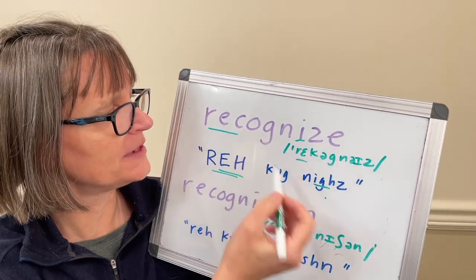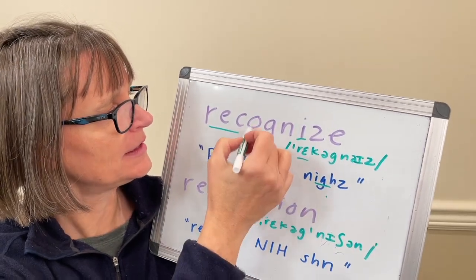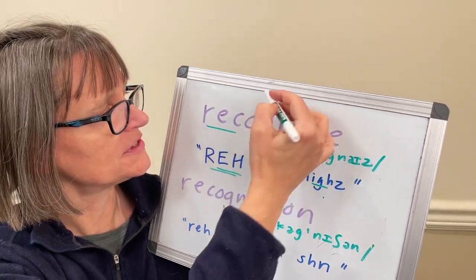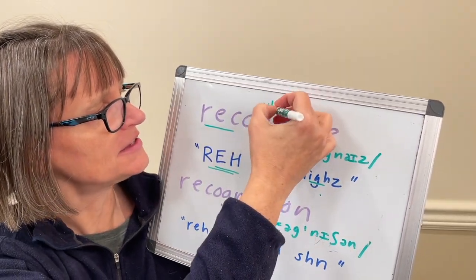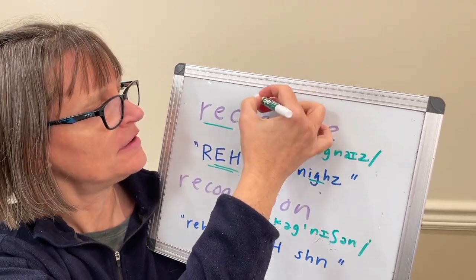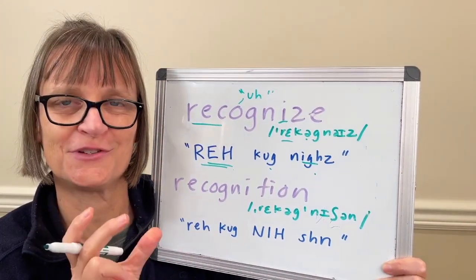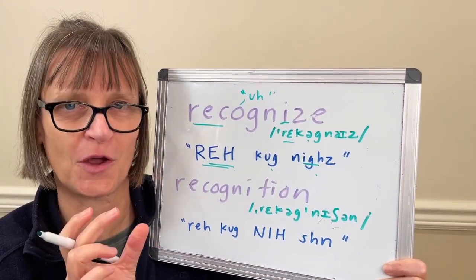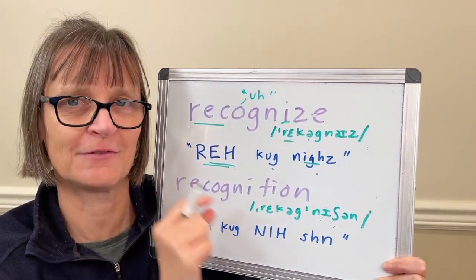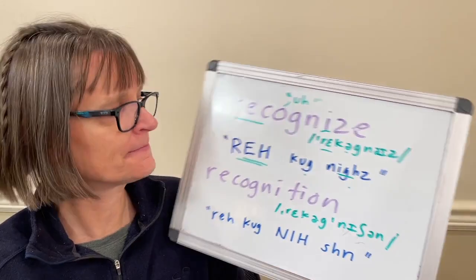In that middle syllable, the letter 'o' is going to say the 'uh' sound — the vowel schwa — because it's unstressed. It's a reduced vowel that goes by quite quickly. Recognize.